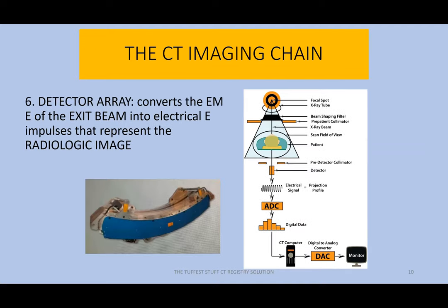Number six is the detector array. Test answer: it's the detector array that converts the electromagnetic energy of the exit beam into the electrical energy impulses that represent the radiologic image. Converting the X-ray photons — that X-ray pattern coming from the patient — into a pattern of electrical energy impulses that represent the radiologic image. We just translated the image through the detector array.